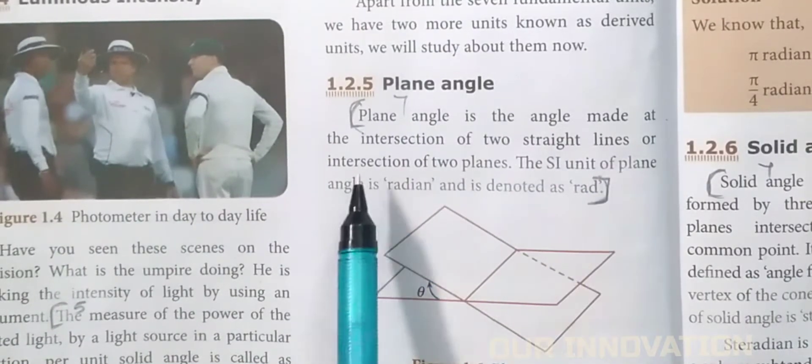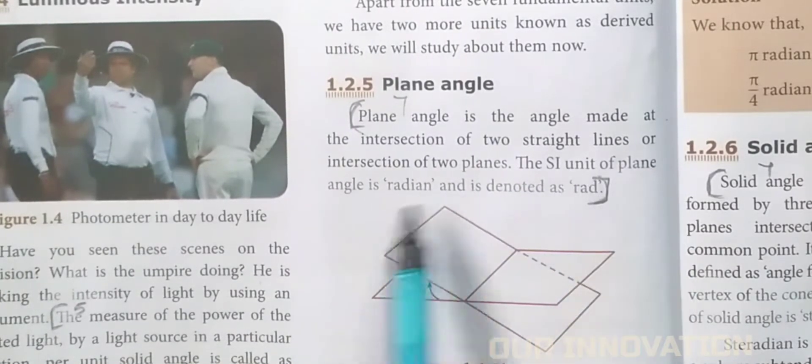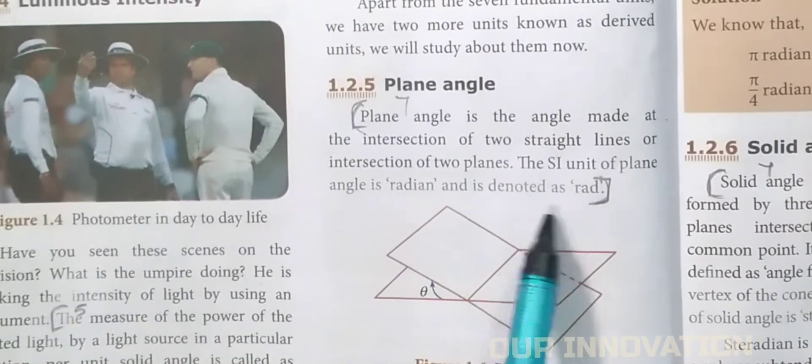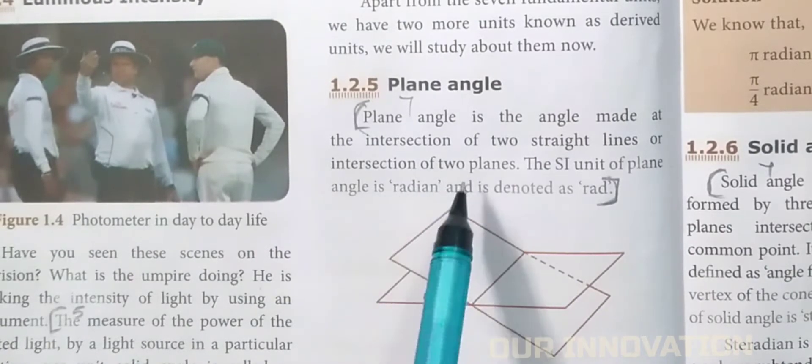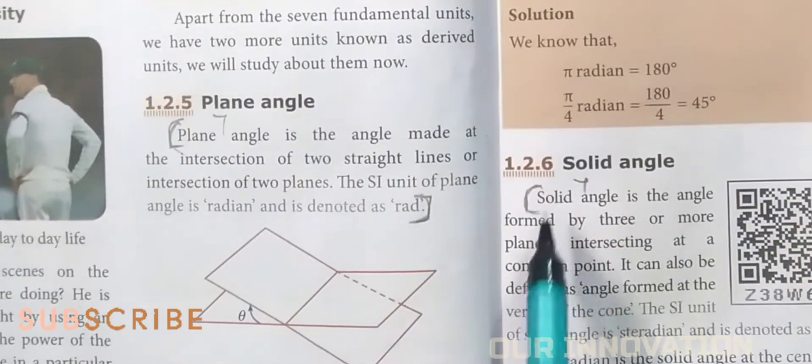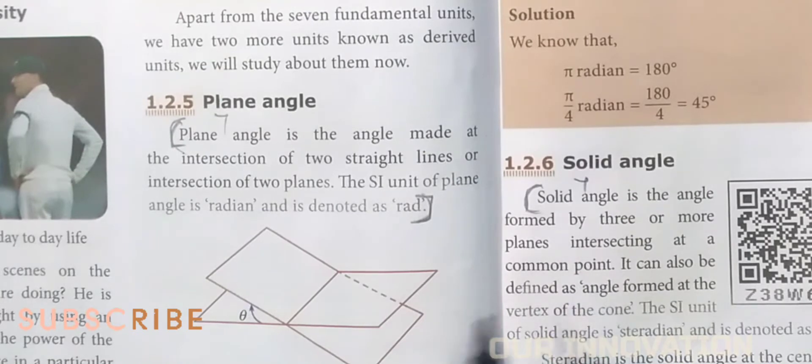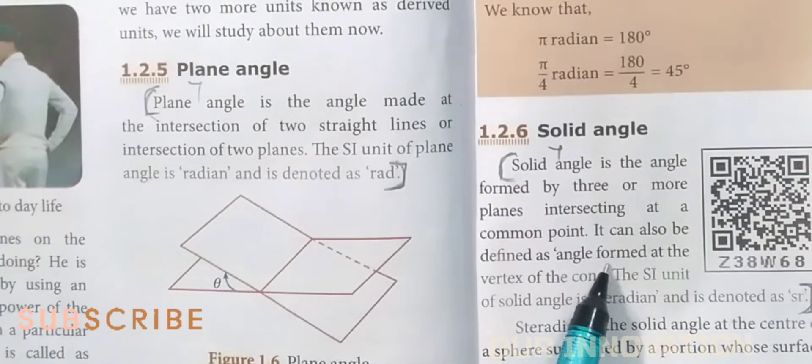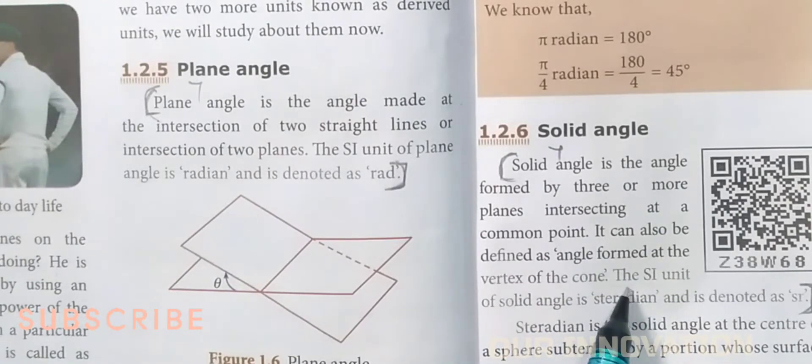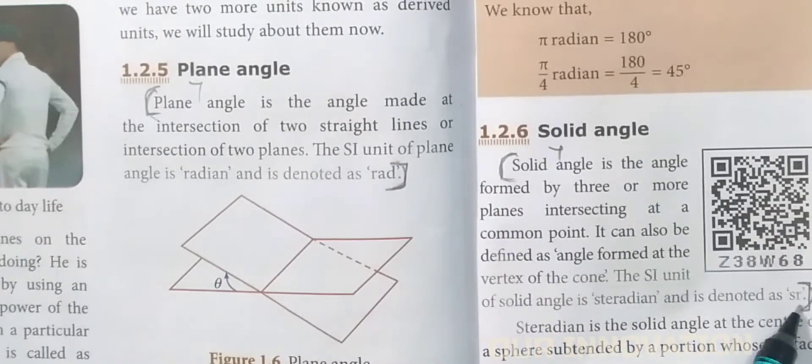Plane angle is the angle made at the intersection of two straight lines or intersection of two planes. Solid angle is the angle formed by three or more planes intersecting at a common point. The SI unit of solid angle is defined as the angle formed at the vertex of the cone. The SI unit of solid angle is steradian and it is denoted as sr.